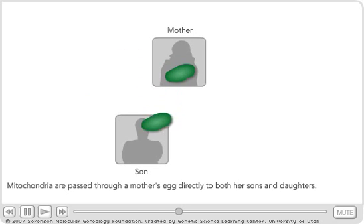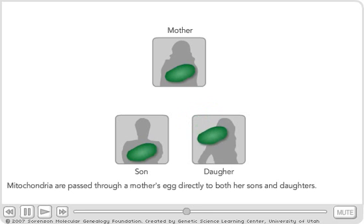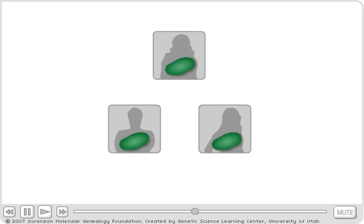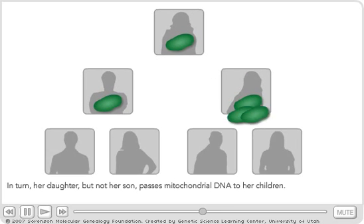Mitochondria are passed through a mother's egg directly to both her sons and daughters. In turn, her daughter, but not her son, passes mitochondrial DNA to her children.